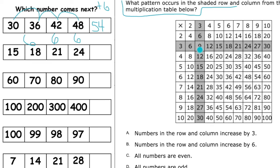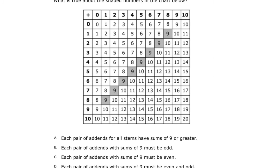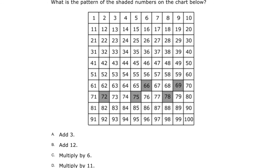In this exercise you are going to be using multiplication. What pattern occurs from the shaded row in the column from the multiplication table below? We have 3, 6, 9, 12, 15, 18, 21, 24, 27, 30, 33. You have options A, B, C, and D — identify the sequence of the pattern. Also, what is true about the shaded numbers in the chart, where all values are 9? Read the options and identify the answer.